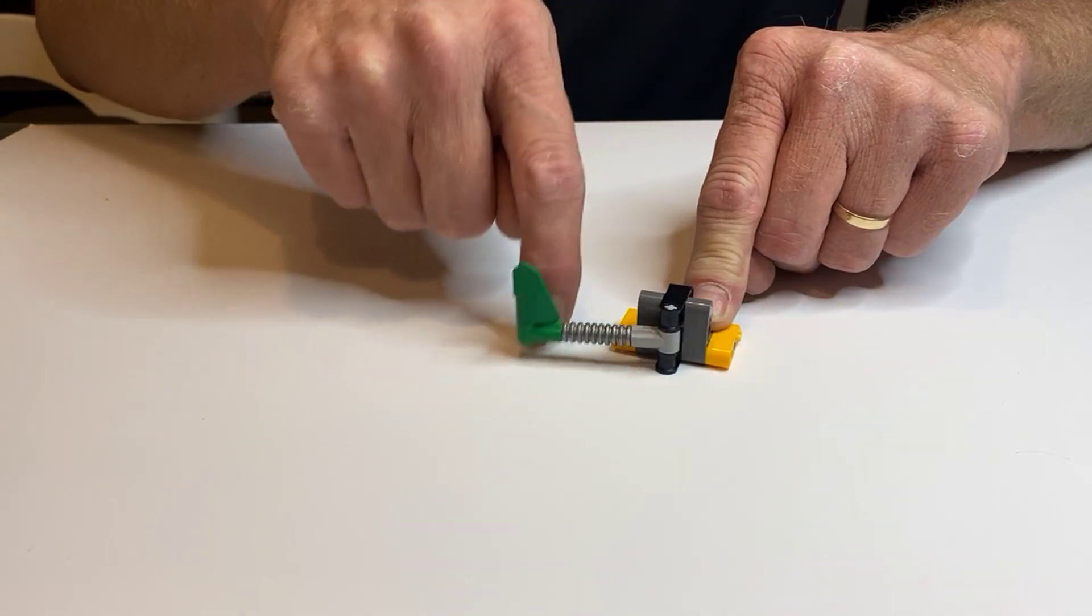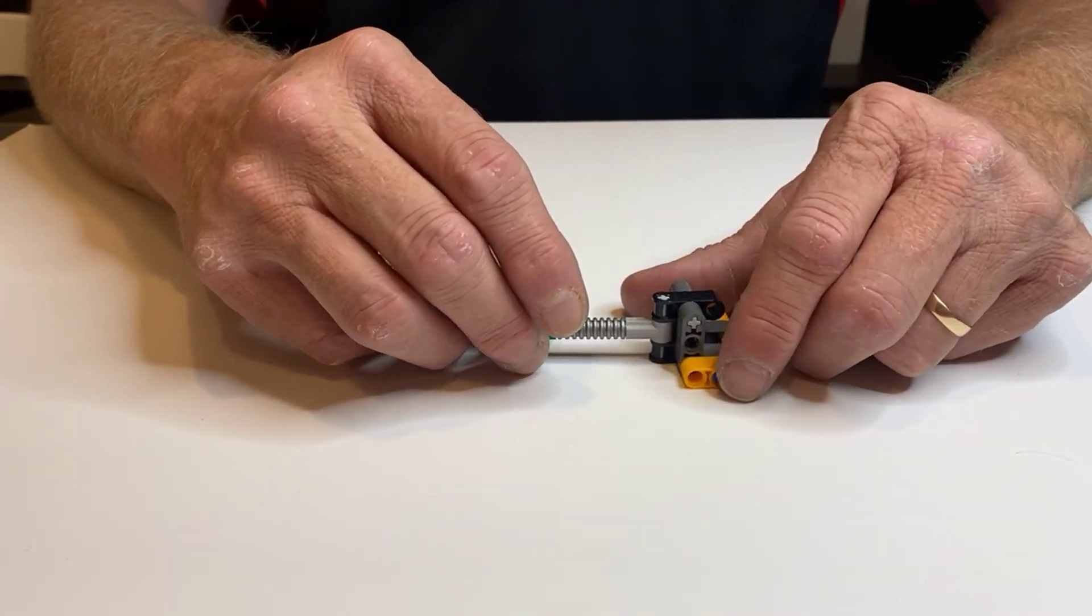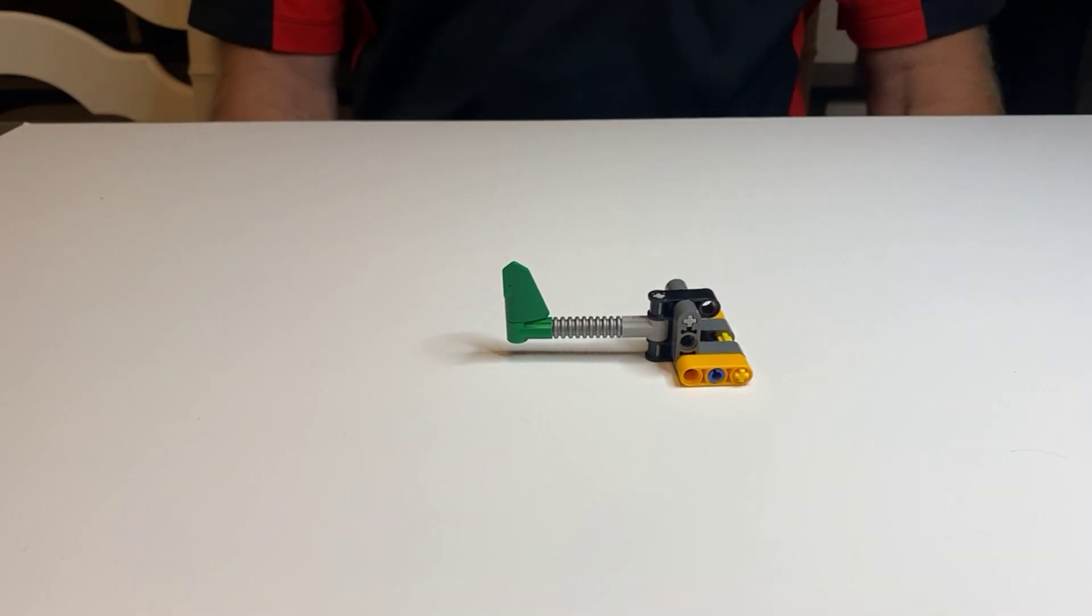So when you put it on the mat, this arm will be able to rotate back and forth. That is your Boulder Shift mission object.